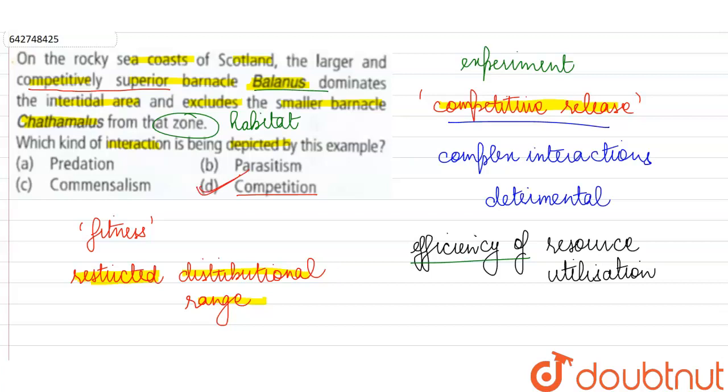Because both of them are closely related species, both are barnacles, so obviously they cannot have a prey and predator relationship. Parasitism is also not there because parasitism is similar to predation in that one species gets benefited and it's detrimental for the other. But here it's detrimental for both species. And in commensalism one species remains neutral and the other benefits, but here nobody is benefiting.